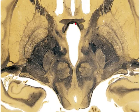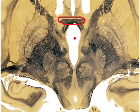Right here we have the anterior commissure. The anterior commissure is a bundle of white fibers connecting both of the hemispheres.